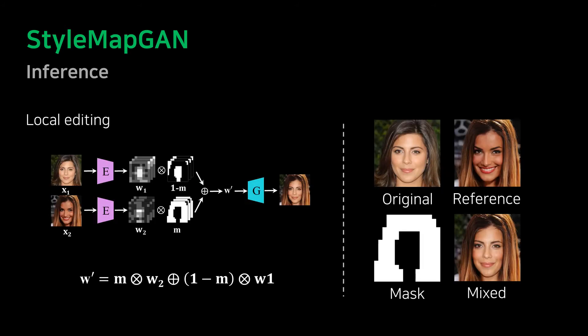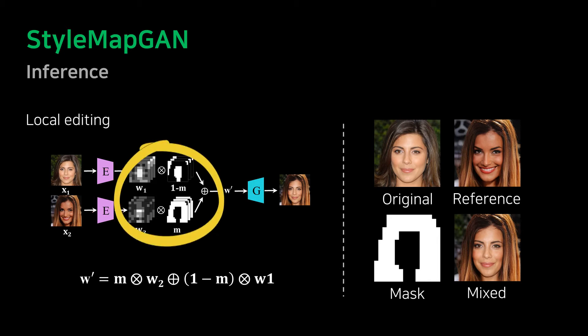In the inference time of local editing, first we get the StyleMap W corresponding to each image through the encoder. Afterward, we use alpha blending to produce a modified latent W prime and put it into the generator to create a blended image.